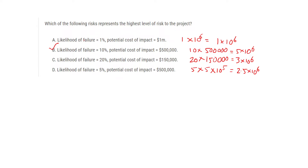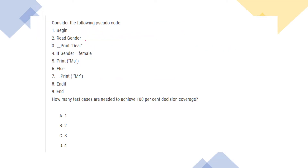Next question: consider the pseudo code. He is asking how many test cases are needed to achieve 100% decision coverage. Whenever pseudo code is given, immediately try to draw the flowchart.